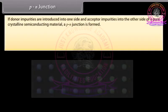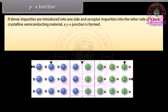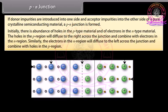P-N junction: if donor impurities are introduced into one side and acceptor impurities into the other side of a pure crystalline semiconducting material, a P-N junction is formed. The donor ion is indicated by a positive sign because after donating an electron, it becomes a positive ion. The acceptor ion is indicated by a minus sign because after accepting an electron, it becomes a negative ion. Initially, there is an abundance of holes in the P-type material and electrons in the N-type material. Holes in the P-region diffuse to the right across the junction and combine with electrons in the N-region.